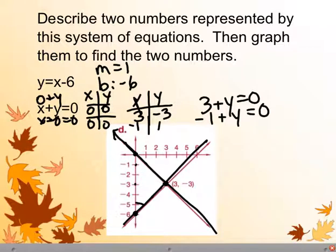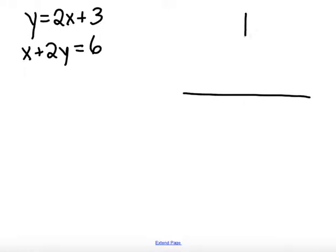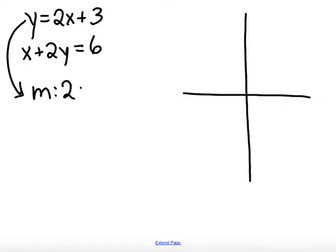One more example. What if we had y equals 2x plus 3, and x plus 2y equals 6? For y equals 2x plus 3, it's in slope-intercept form. My slope is 2 over 1 and my y-intercept is positive 3.